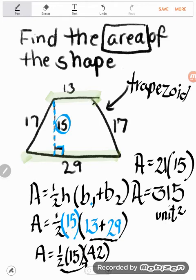So it would take 315 little squares, square units, I call them, to cover this whole shape. Okay. Wonderful.